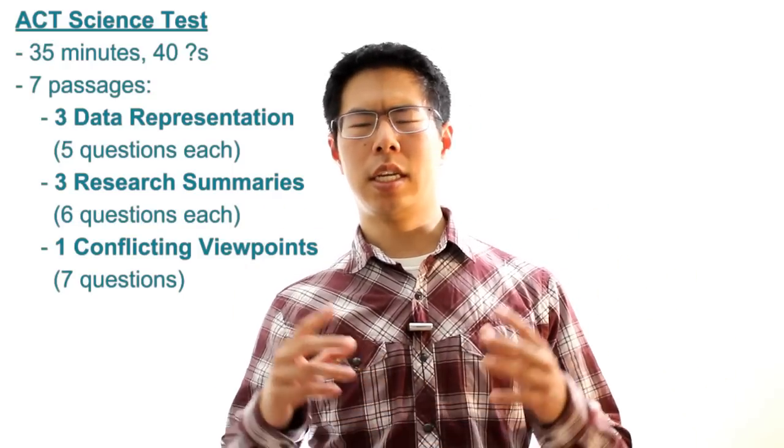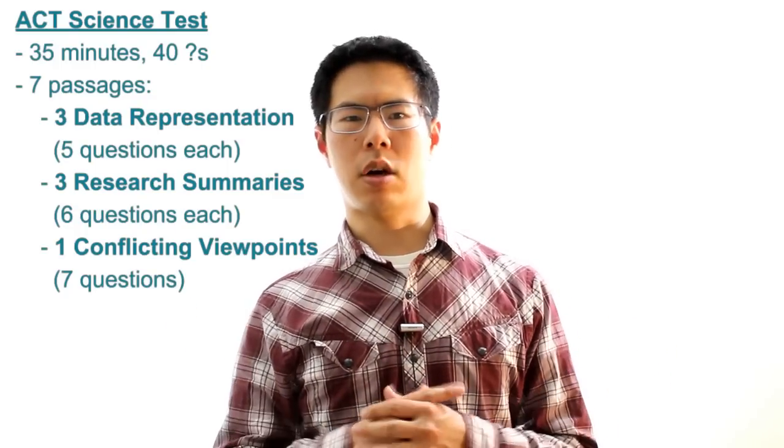The conflicting viewpoints passage is the most different and probably the most challenging out of the seven passages, since it is a technical reading comprehension passage, whereas the other six passages are about finding information in charts and tables.